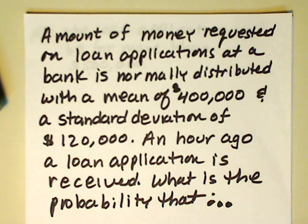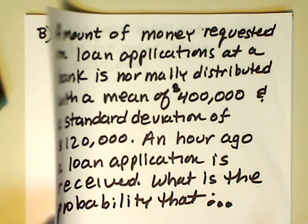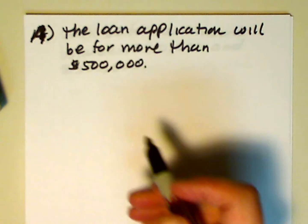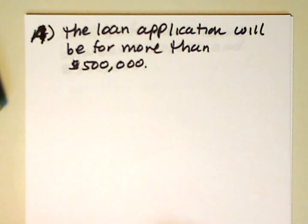The amount of money requested on loan applications at a bank is normally distributed with a mean of $400,000 and a standard deviation of $120,000. An hour ago, a loan application is received by the bank. What's the probability that... Let's look at Part A. What's the probability that the loan application will be for more than $500,000?